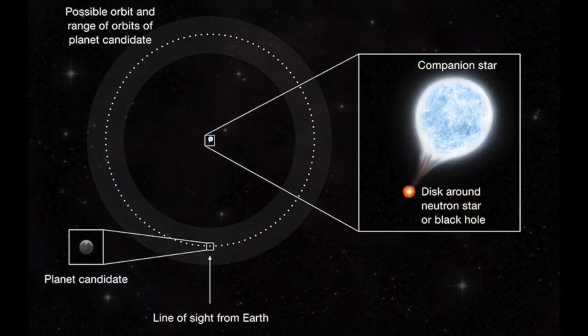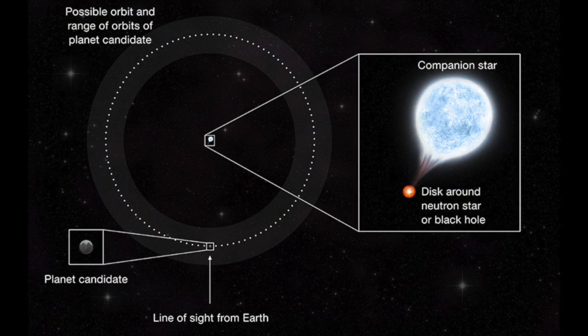Because the region from which the X-rays come is small, it could be blocked from view for a while if a planet in orbit around the binary were to pass in front of it. This is exactly what happened in the case of M51-ULS-1. For three hours, the X-ray emission fell to zero, the most likely explanation being the passage or transit of a planet in front of the X-ray bright region as seen along our line of sight.